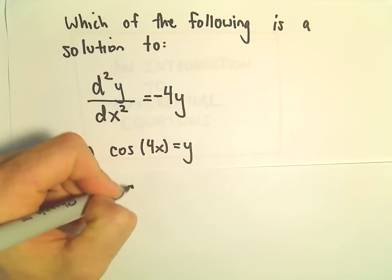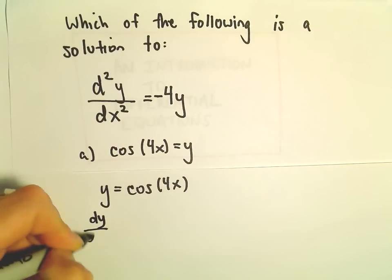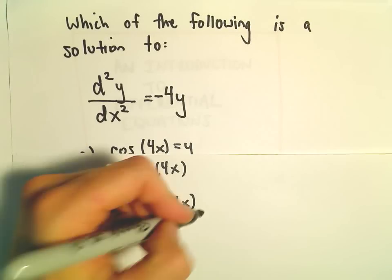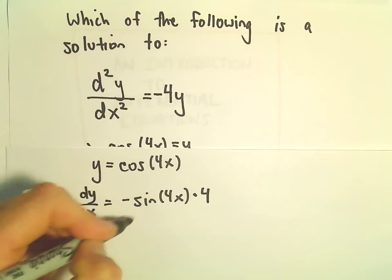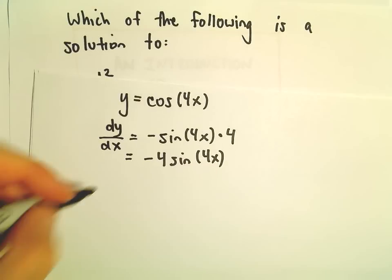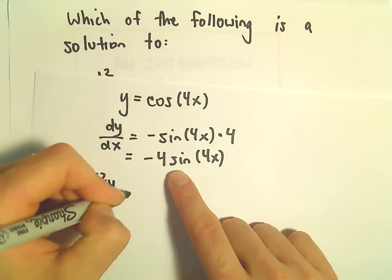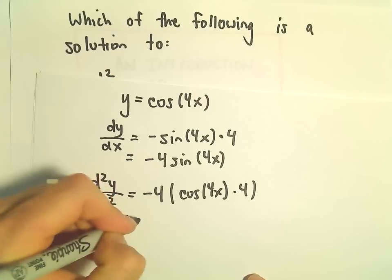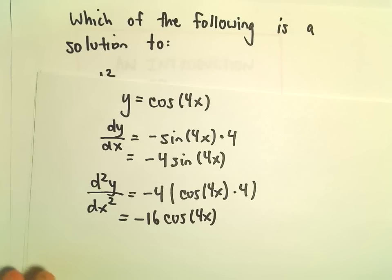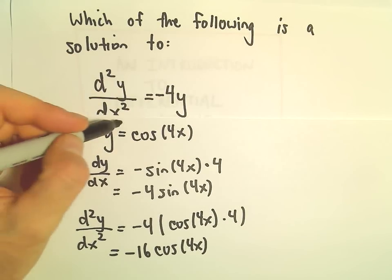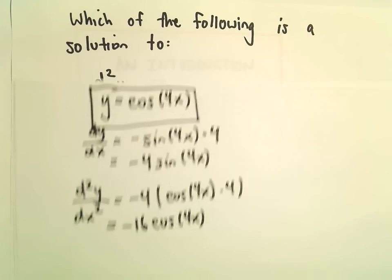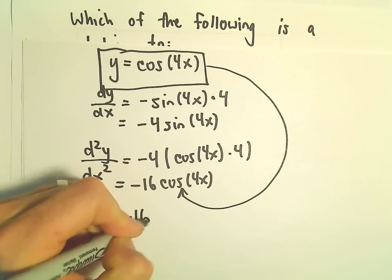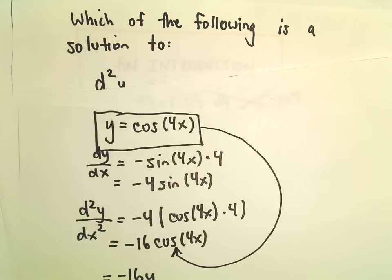We've got y equals cosine of 4x. The first derivative dy/dx: the derivative of cosine is negative sine. We leave the inside alone and chain rule it, so the derivative of the inside is 4, giving us negative 4 sine of 4x. The second derivative: we get negative 4 times cosine of 4x times 4, which gives us negative 16 cosine of 4x, or negative 16y. That's not negative 4y, so part a doesn't work.